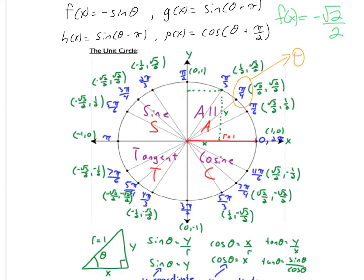Now let's try g of x. Sine of pi over 4 plus pi — so pi over 4 is here, plus a full pi will bring us to sine of 5 pi over 4. The sine value is your y value, so that's going to be negative root 2 over 2, which matches our f of x.